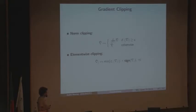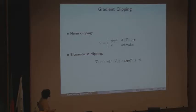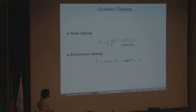Gradient clipping is simple: you define a threshold on gradient magnitudes. If the norm of the gradient is larger than the threshold, you scale it so it equals exactly that norm; otherwise you don't change it. This is called norm clipping. There's another variant that works coordinate-wise, clipping each coordinate individually instead of scaling the entire vector.